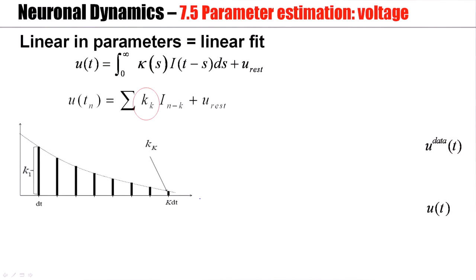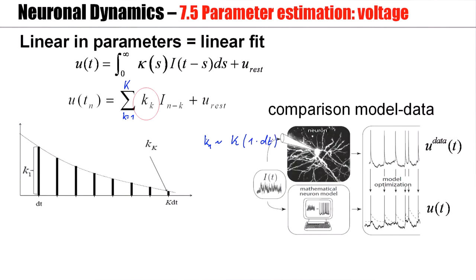In practice, we work in discrete time. So this integral over past input with the filter kappa is transformed into a sum over time steps. So k is an index, the lower index here, and k runs from 1 to capital K. So k sub 1 would be this first entry. One time step later, I have k sub 2. The last entry is k sub K. This is like having a continuous filter shape, kappa of s, and we read out at discrete times. Now what can we do with this kind of description?